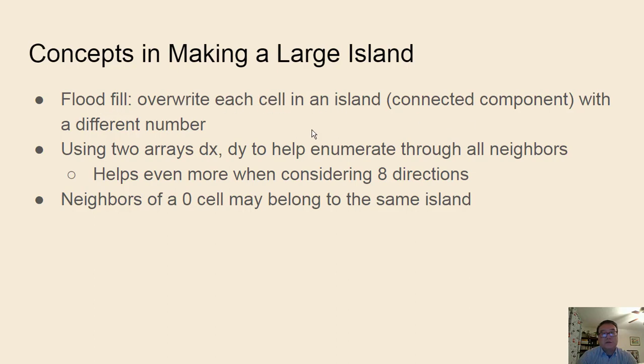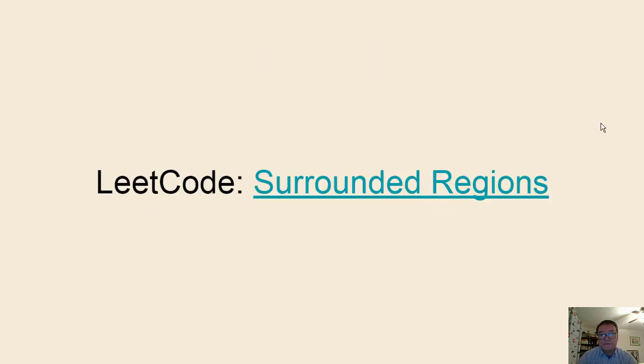To summarize the concepts: flood fill to overwrite each cell in an island with a particular value. We use two arrays dx, dy to help enumerate through all neighbors, and this is even more helpful when you are considering eight directions or if we are doing things like knight's move. Using this dx, dy arrays will also be helpful to code those. Another generic concept is that we use a separate array that stores the size of all the connected components, and then each of the connected components, each meaning island, will be overwritten with a different number. This technique is useful for a number of problems.